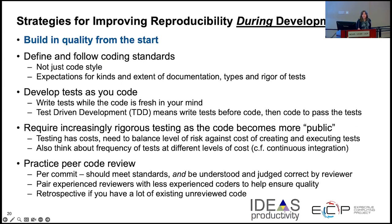Build quality from the start. Define and follow coding standards — not just code style, but expectations for the kinds and extent of documentation, the types and rigor of tests, and scheduling. Develop tests as you code — write the test while the code is still fresh in your mind. If you're doing something to the code, you're probably testing it manually, so write that into a test and add it to your testing system. Or use test-driven development: write the test first, code to the test, then make sure they work.